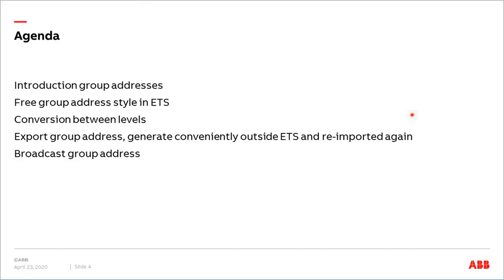The agenda for today: ETS 5 and group addresses — a more general topic but there are some interesting details behind it. I will start with a small introduction to group addresses, then Jürgen will explain the different group address styles and levels, especially the free group address style which is not often used but has some advantages. It's possible to convert between levels, at least partly. We'll also look at how to handle group addresses externally with export and working with Excel, and finally a special so-called broadcast group address.